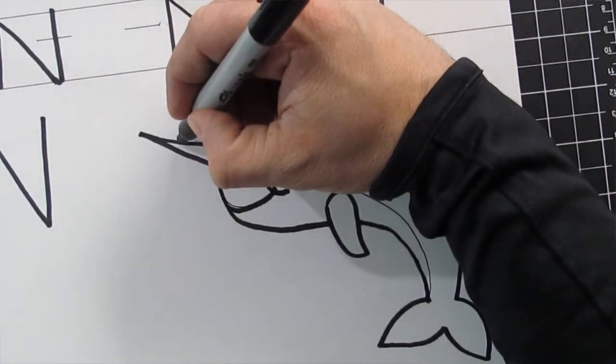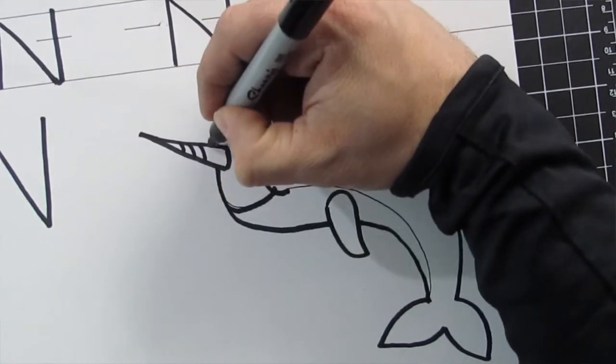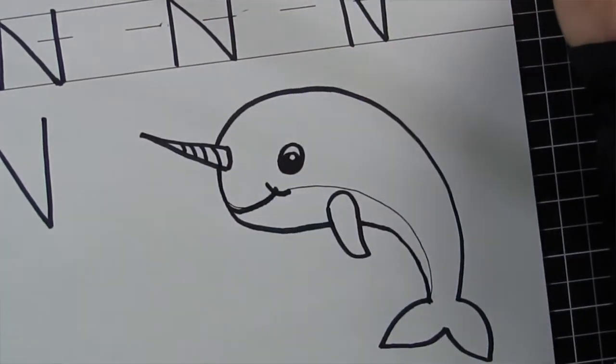Let's do one more thing. Let's give it like a spiral look, so it's really just gonna be some diagonal slanted lines on the unicorn horn, kind of like a candy cane, just like that. That way it kind of looks like it's twisting around.